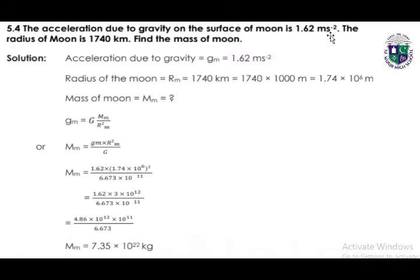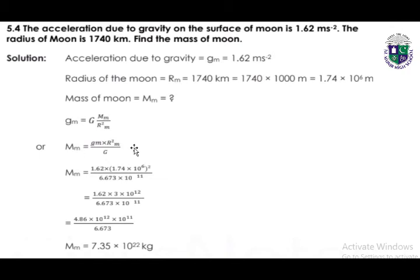Question 5.4: the acceleration due to gravity on the surface of the moon is 1.62 m/s², and the radius of the moon is 1740 kilometers. We convert the radius to meters, just as we did above. We need to find the mass of the moon. Rearranging the gravity formula, M = g·R² / G, we take mass to the left-hand side and put all given values on the right-hand side.